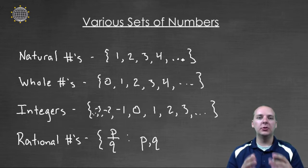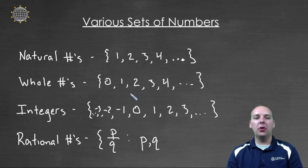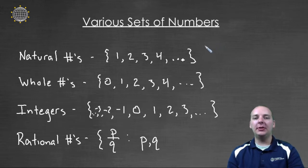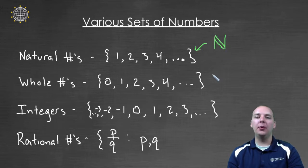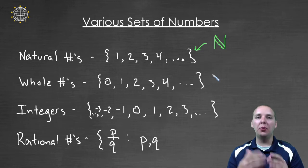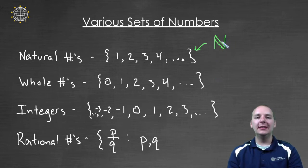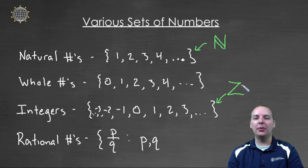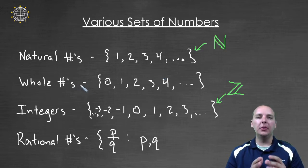Mathematicians are always looking for shortcuts. Natural numbers, whole numbers, and integers can each be expressed with one letter. For example, the natural numbers are written with a capital N in Blackboard Bold — this font is called Blackboard Bold because it's how most instructors write bold letters on a blackboard. The integers are written with a capital Z. You can use a capital W for the whole numbers, but most people focus on capital N for natural numbers and capital Z for integers.